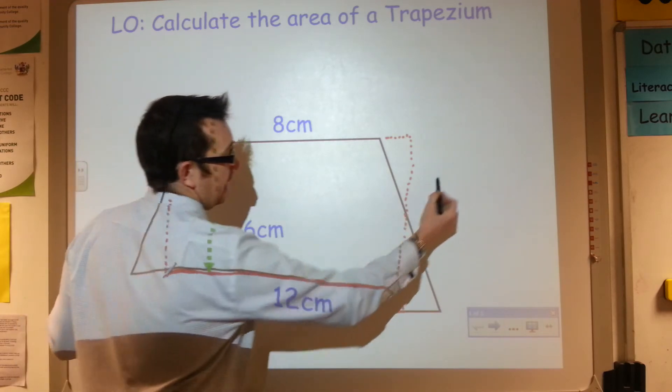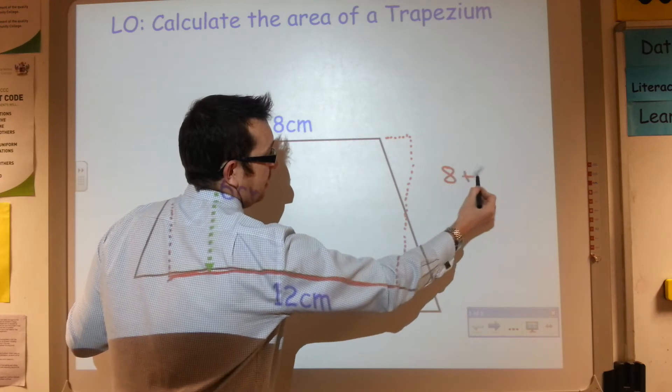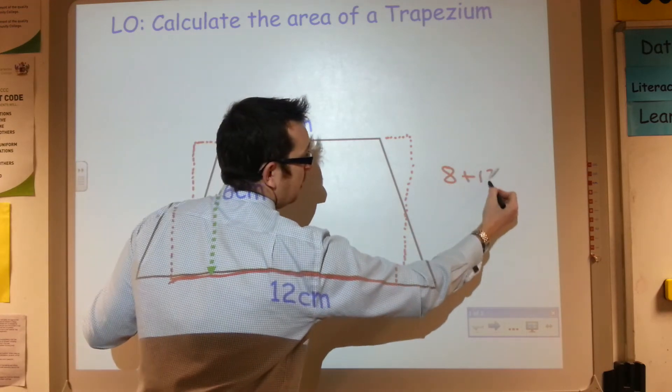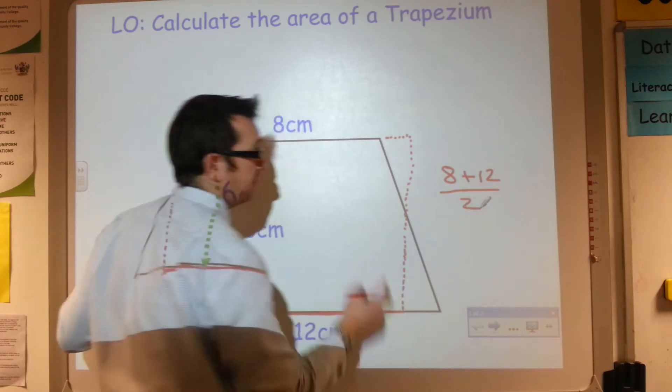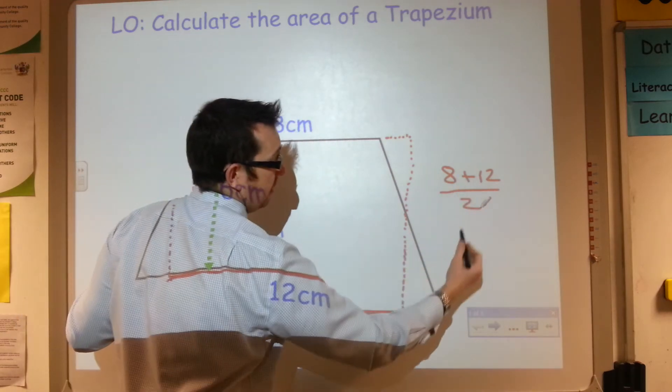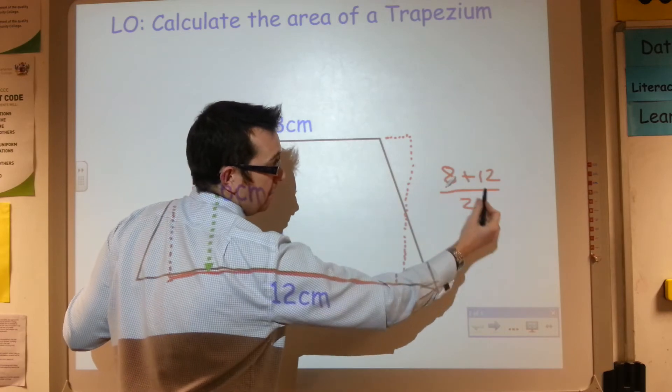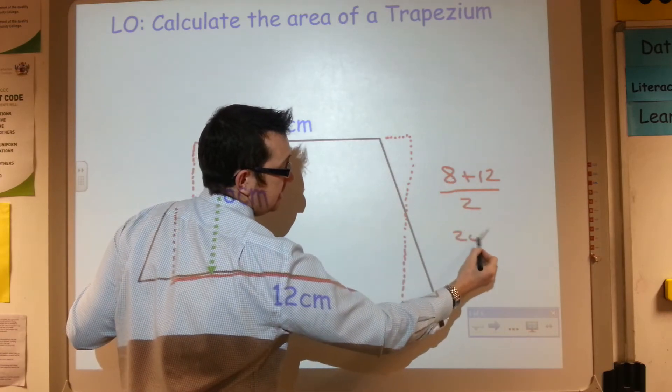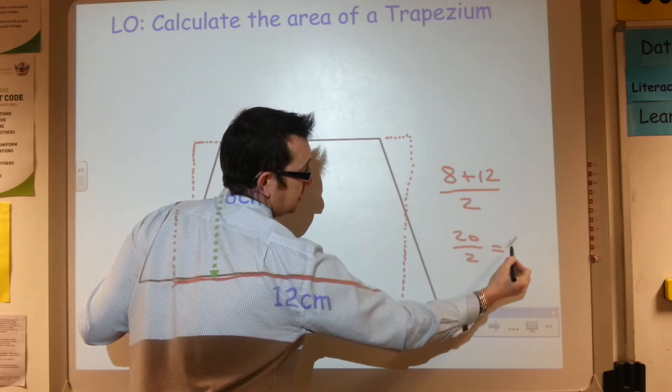So the way I can work that out is if I add them together, the 8 plus the 12, and then I divide that by 2 to find the average of those two lengths. So 8 add 12 is 20, divided by 2 is 10.